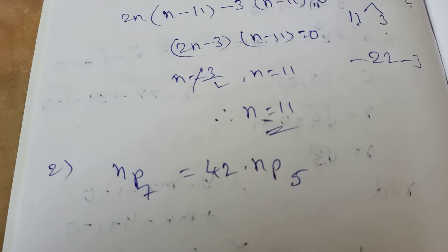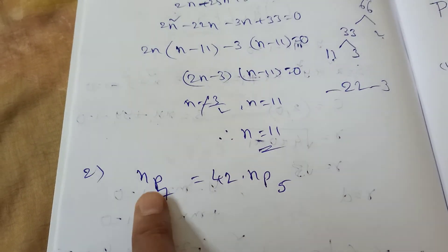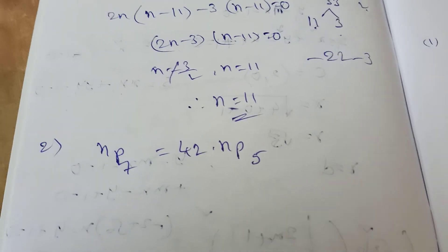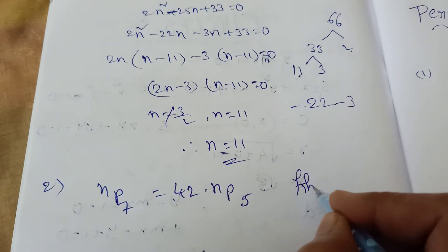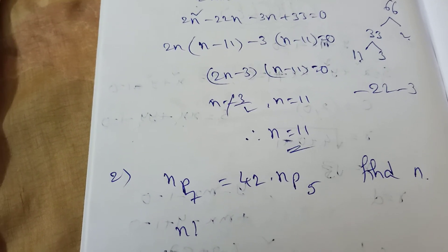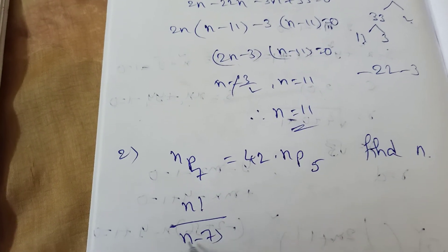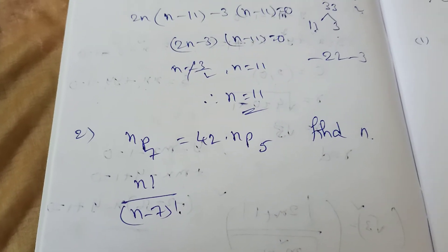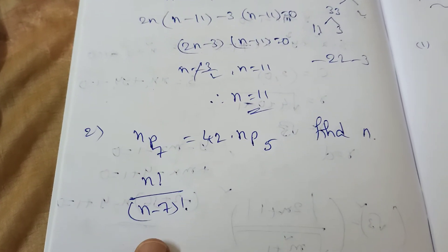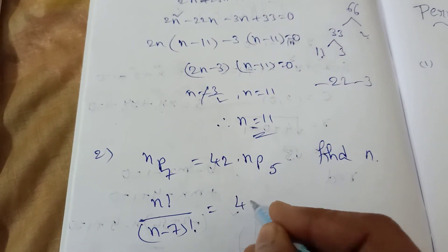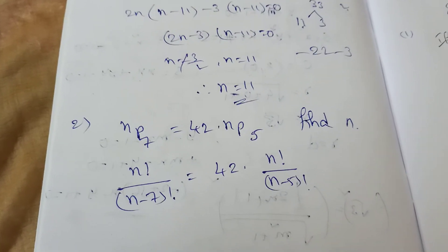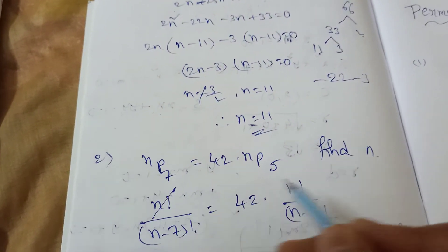Moving to the second question: nP7 equals 42 times nP5, find n. Write nP7 as n factorial divided by (n minus 7) factorial, equal to 42 times n factorial divided by (n minus 5) factorial.